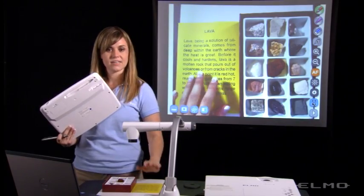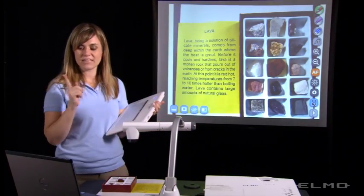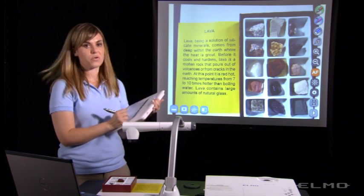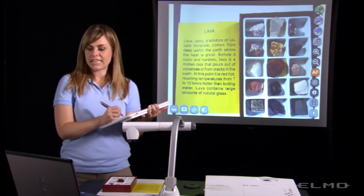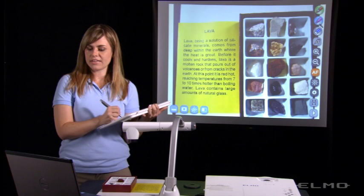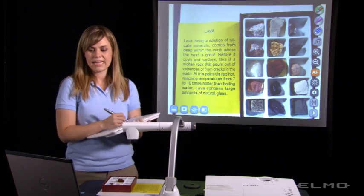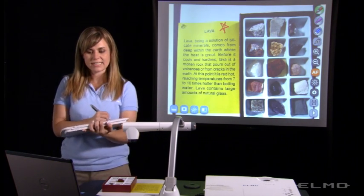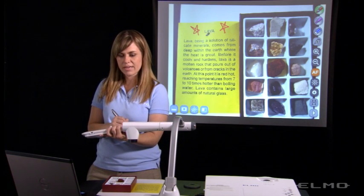I can also annotate on this live image using my pen tools in the upper right hand corner. I just select my pen and you can see that it will turn green when it's been selected. And now I can annotate on my image.